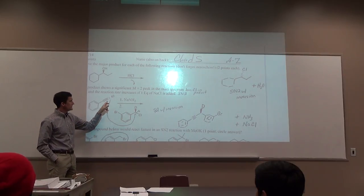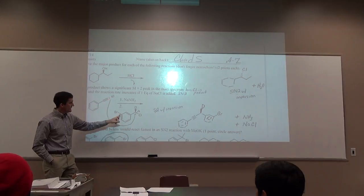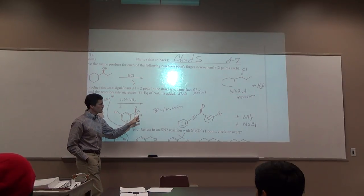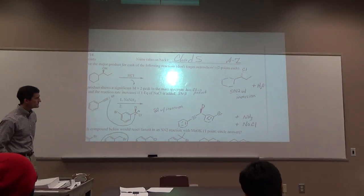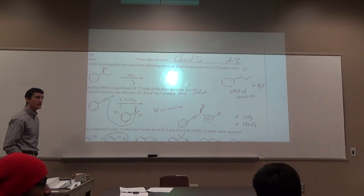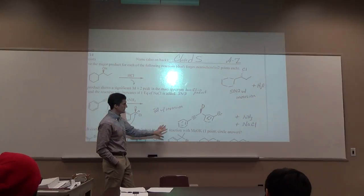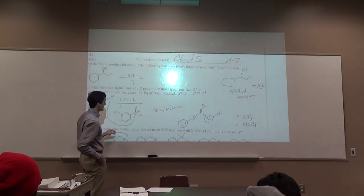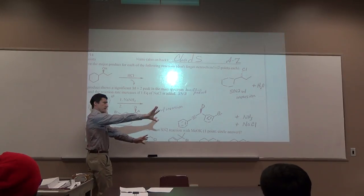Next one. Sodium amide is going to deprotonate the terminal alkyne, make the acetylide anion. And then we have a carbon with a leaving group. It's going to be SN2. SN2 with inversion. What did the deuterium do? I drew the nucleophile over here. Chlorine is over there, so the nucleophile comes over here and it pushes everything that way.